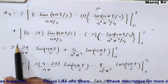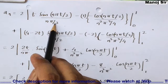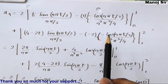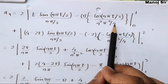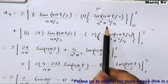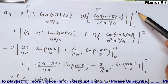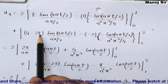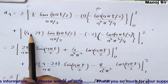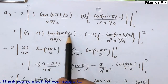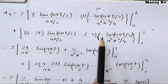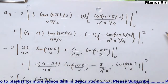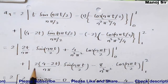Simplifying: the first part gives 2t · sin(nπt/2)/(nπ) plus 4cos(nπt/2)/(n²π²), from 0 to 1. The second part gives 2(4 − 2t) · sin(nπt/2)/(nπ) minus 8cos(nπt/2)/(n²π²), from 1 to 2.